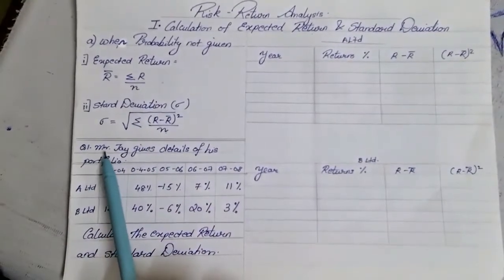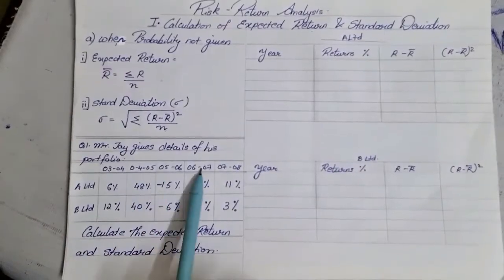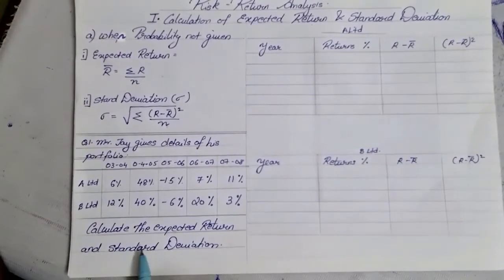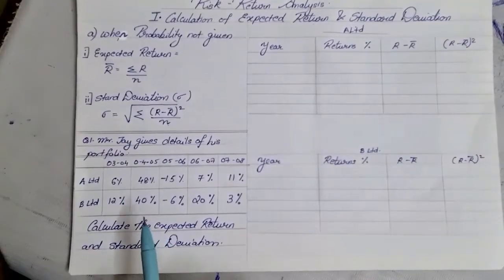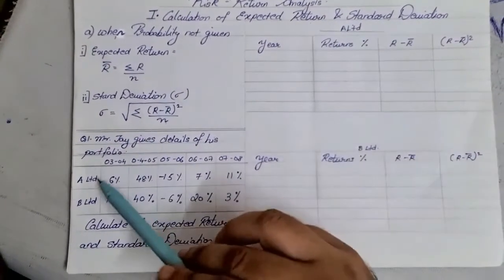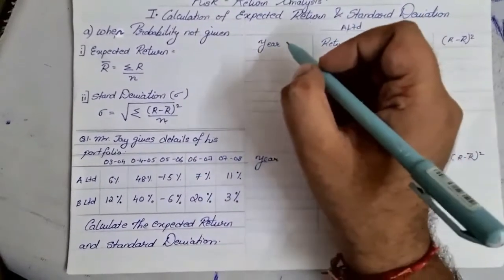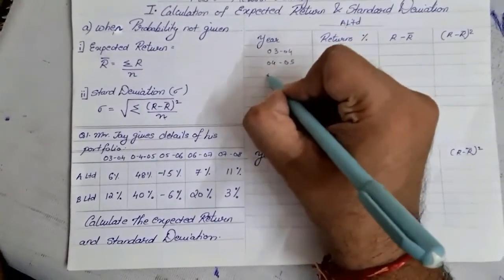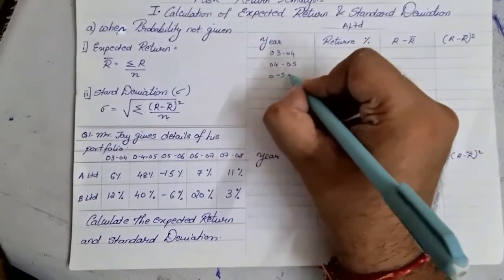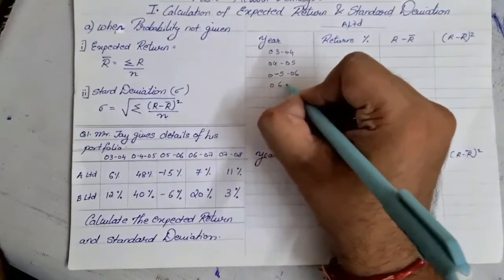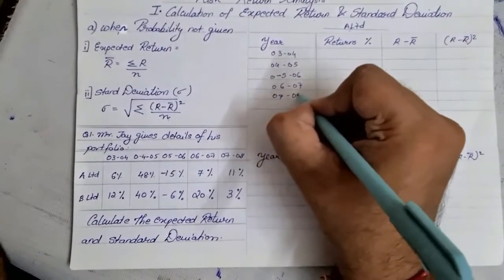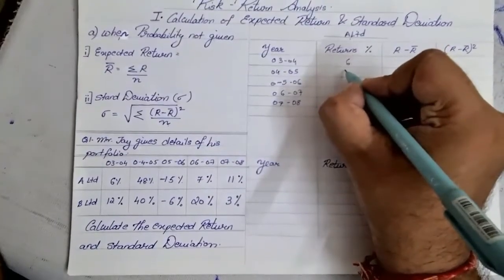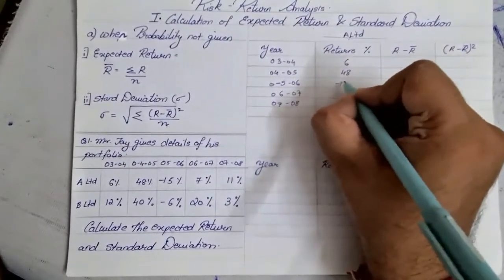The question given here is: Mr. J gives details of his portfolio. There are multiple years and they are giving you returns of A Limited and B Limited, asking you to calculate the expected return and standard deviation. Let us start finding the expected return and standard deviation for A Limited. The years are 2003-2004, 2004-2005, 2005-2006, 2006-2007, and 2007-2008. The returns are 6%, 48%, and negative 15%.